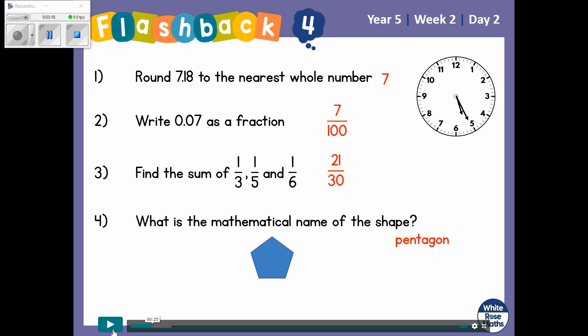And then the numerator, we also need to multiply by 10. So 1 multiplied by 10 is 10. So all of our numerators are 30. That stays the same.